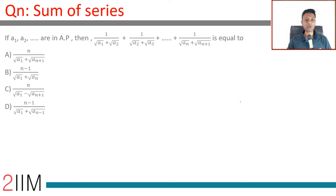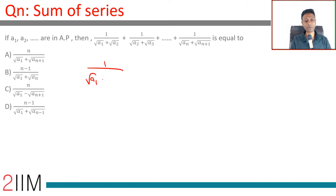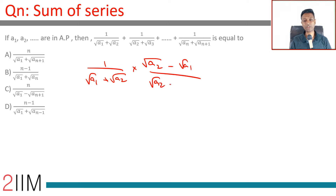a1, a2, a3 are all in AP. What is this equal to? This is a classic question where we rationalize the denominator: 1 over (√a1 + √a2), multiplied by (√a2 - √a1) over (√a2 - √a1).